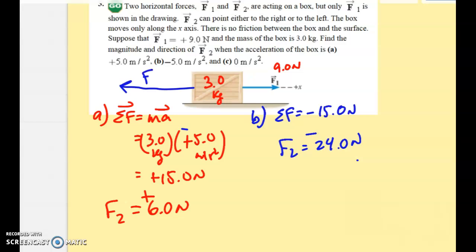And if I want 0 meters per second, so that means that I have to have no net force. So for C, I know the net force is 0. Then I know that I must have a 9 newton force that way and a 9 newton force that way. And so F2 is going to be 9 to the left.